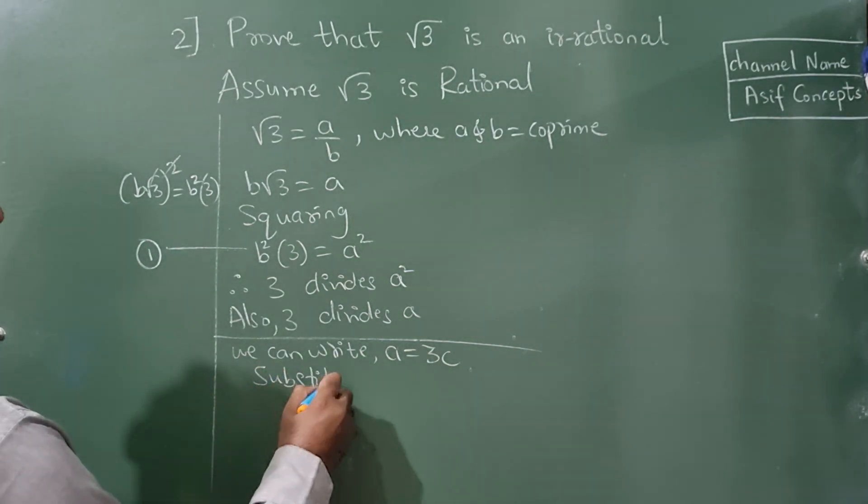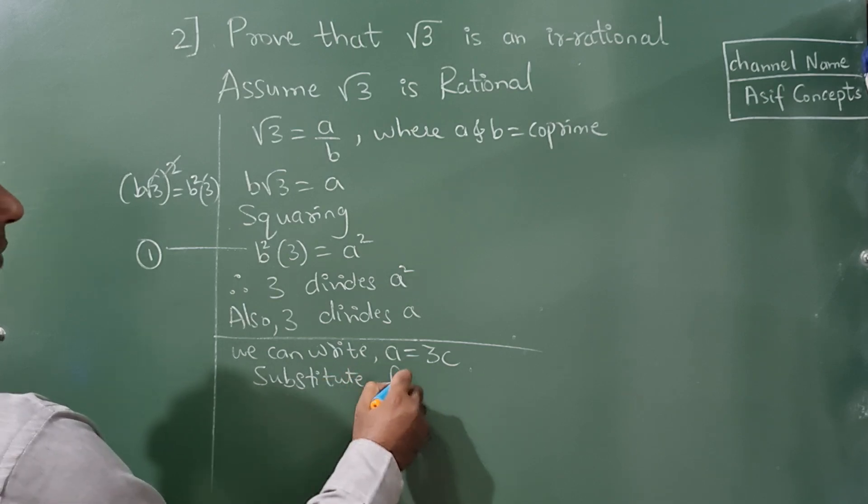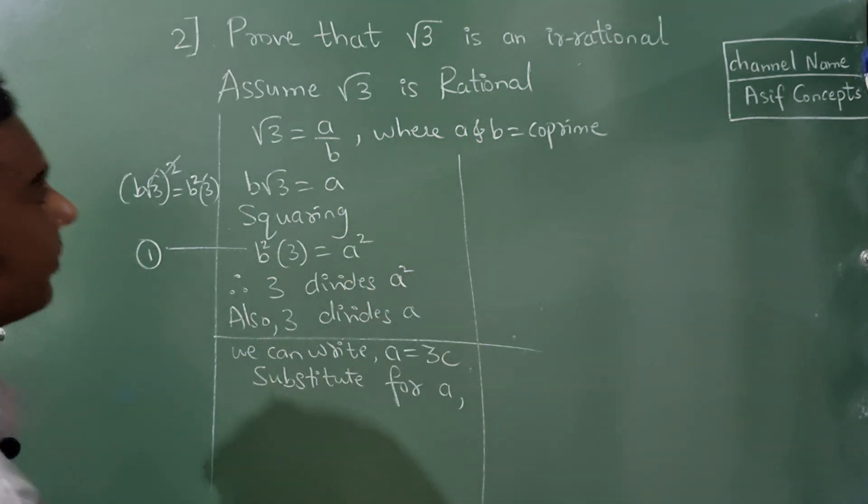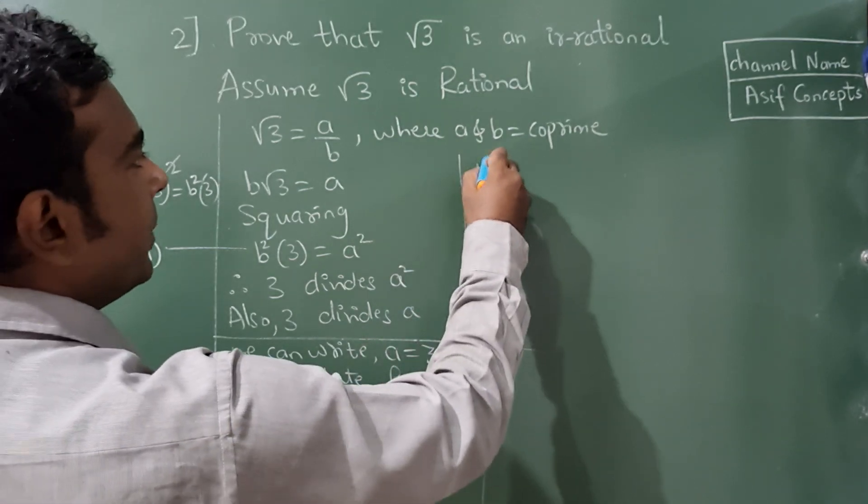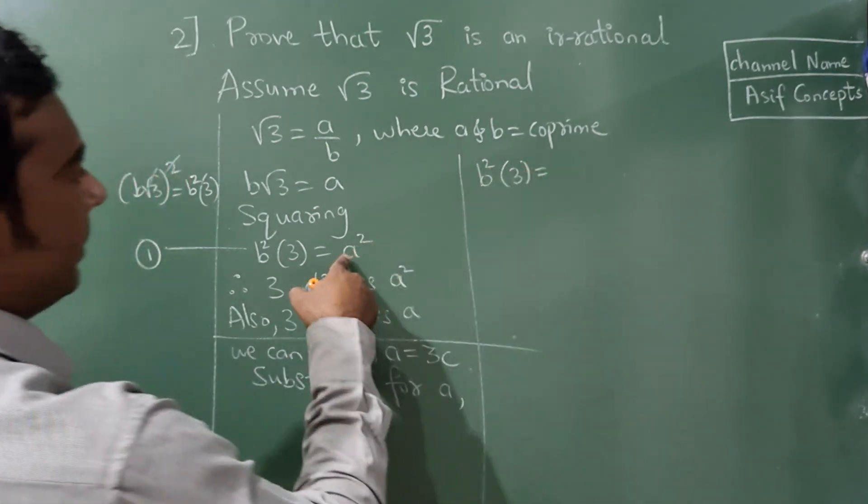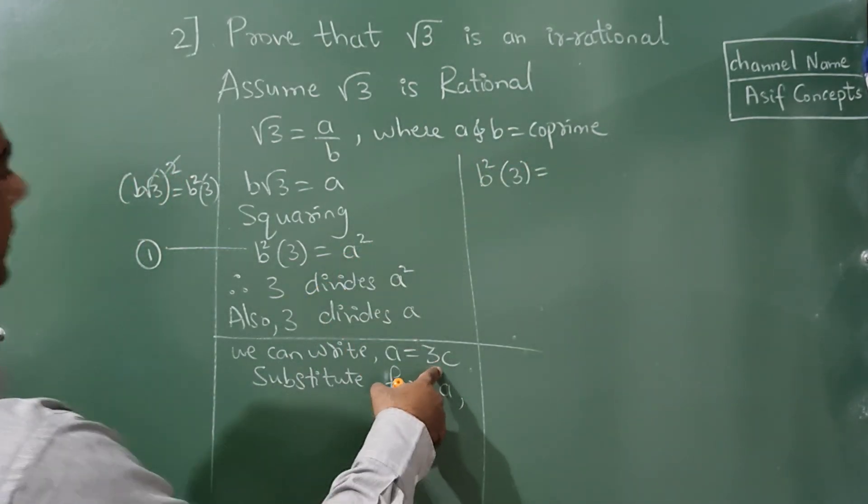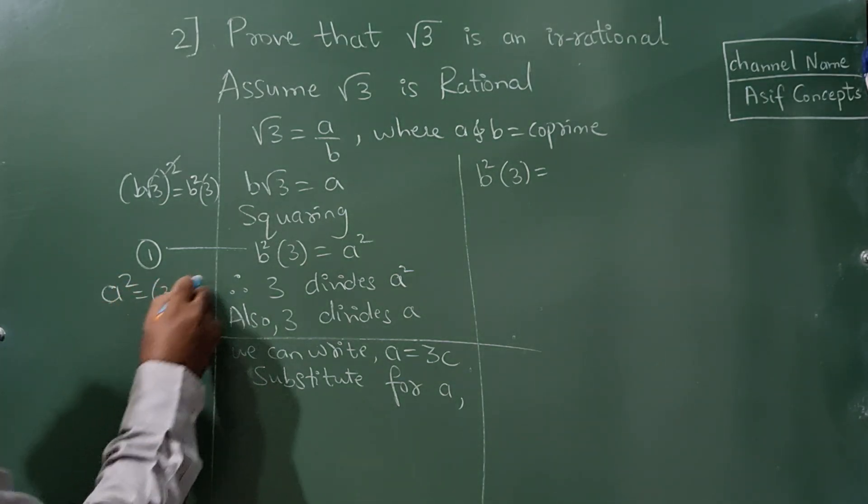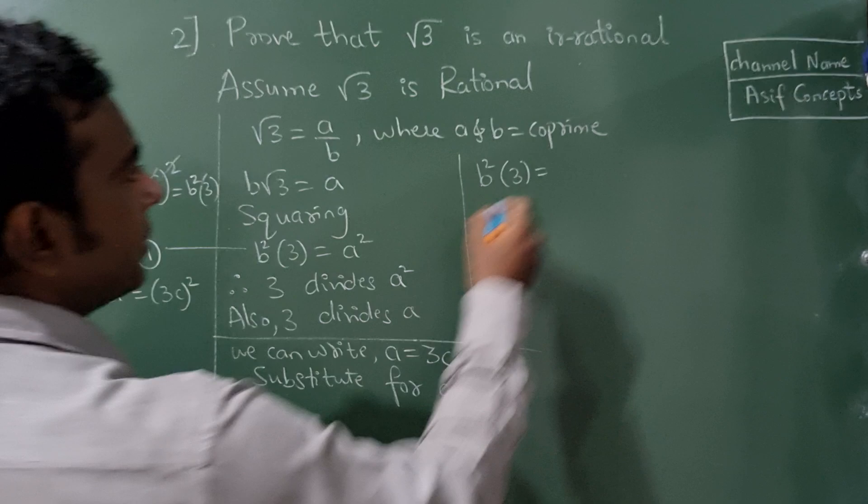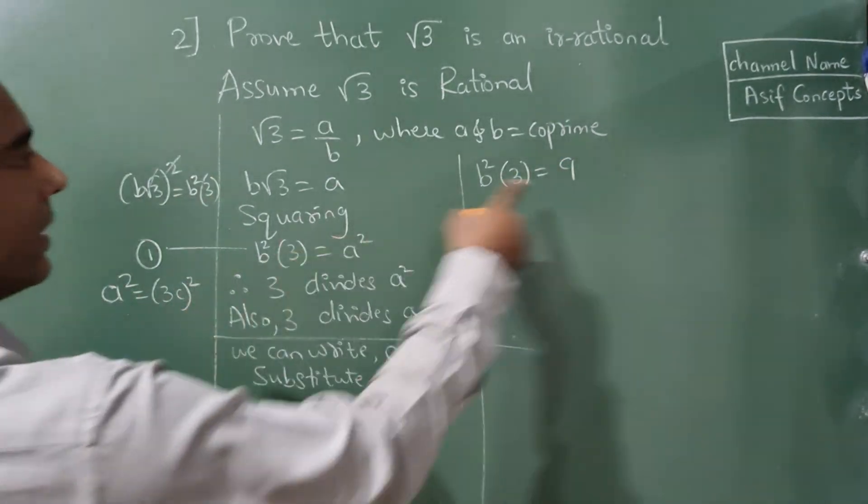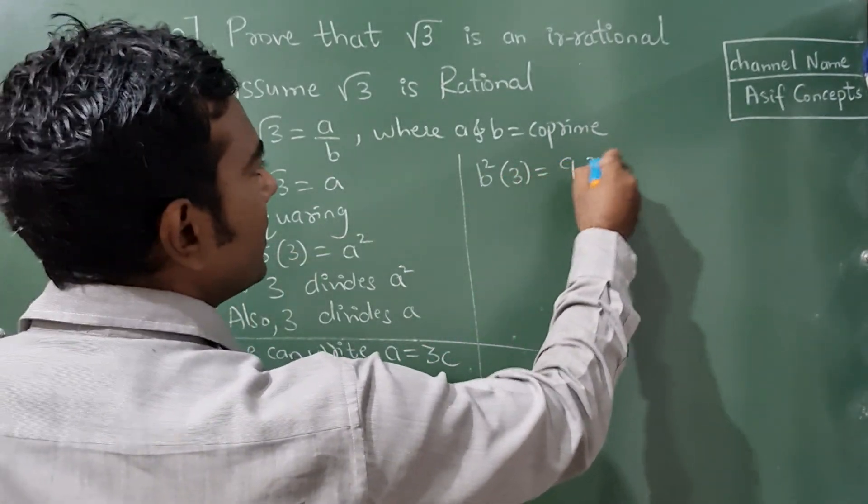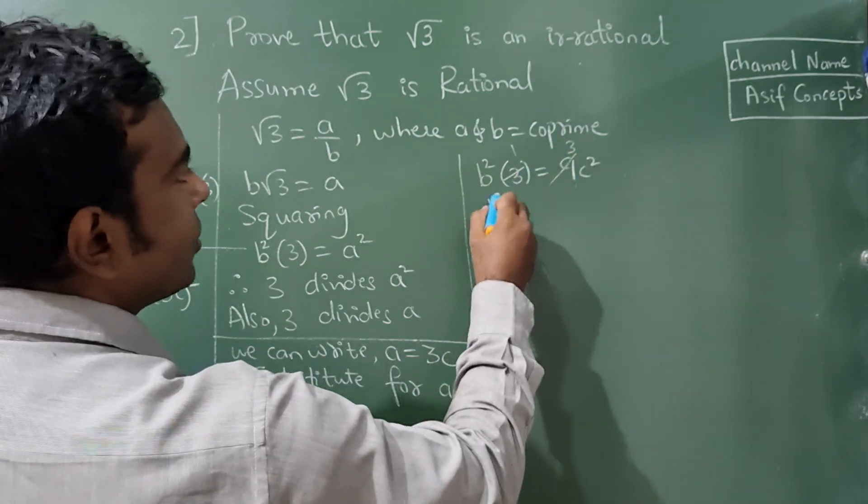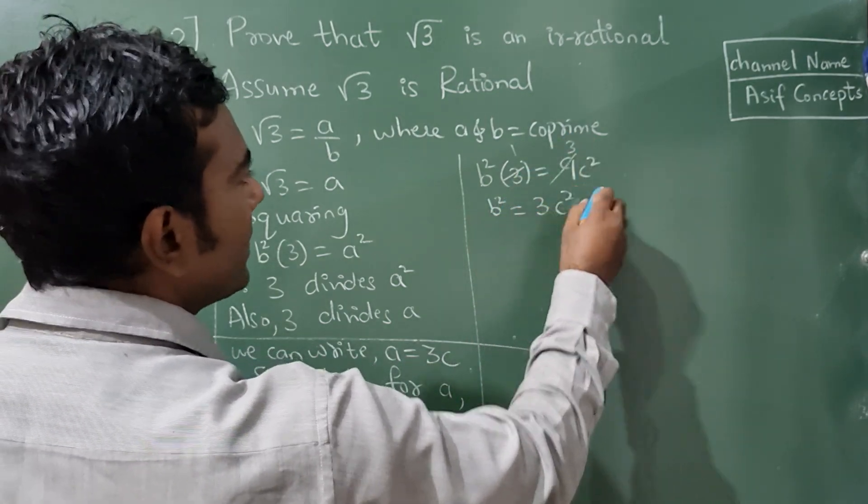Substitute for a here. Now, b square into 3, in place of a, if I substitute 3c, so it is a square. So 3c square will become how much? 3 square is 9 and c square here. Now, 3 threes are 9, so b square equals 3c square.